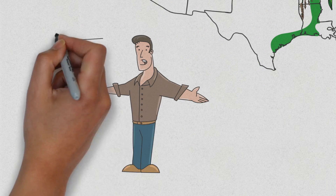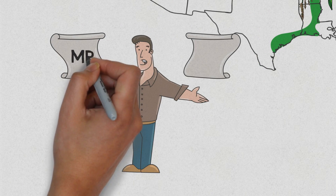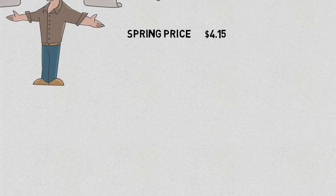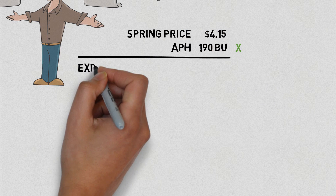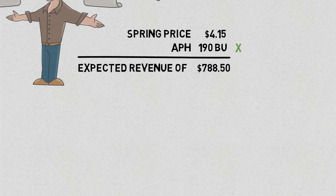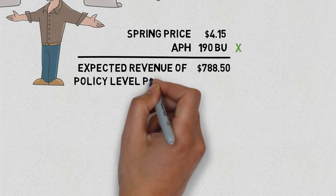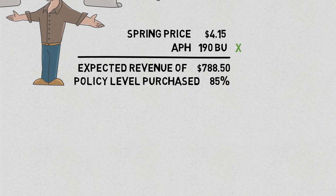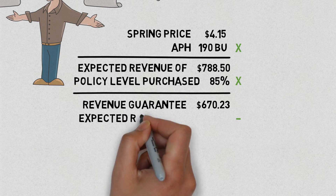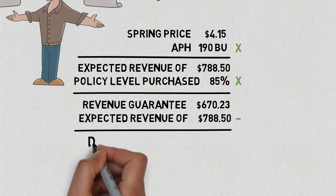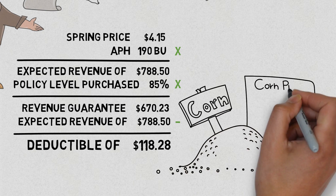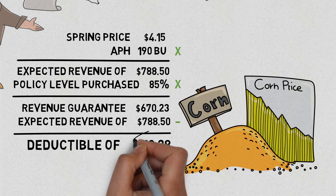Let me explain how it works. I'll compare this with something you might be familiar with — an RP policy. Let's say the RP spring price is set at $4.15 for corn and your producer trend-adjusted APH is $190. Take the spring price and multiply it by the trend-adjusted APH and you get the expected revenue of $788.50. Then multiply this against your level purchased — in our example, 85% — giving you a revenue guarantee of $670.23. Subtract the revenue guarantee from the expected revenue and you get a revenue deductible of $118.28.